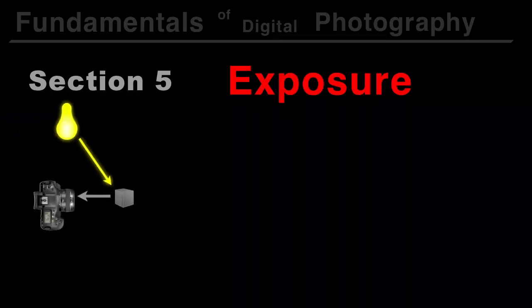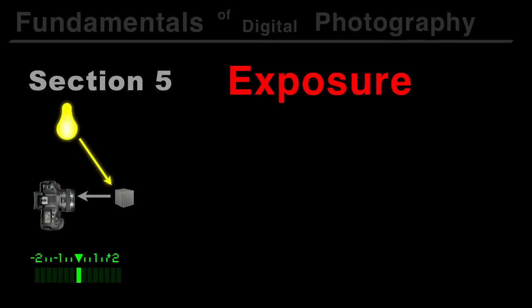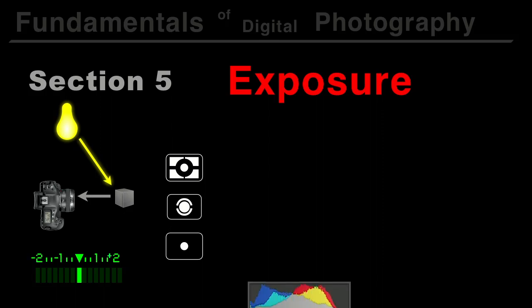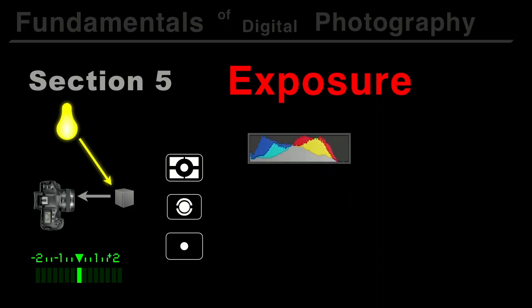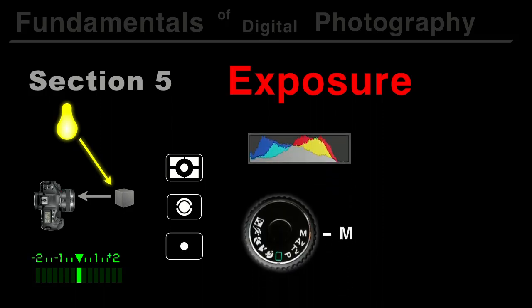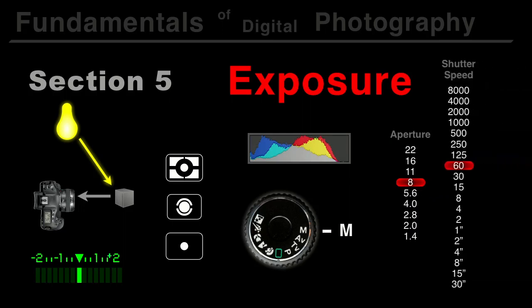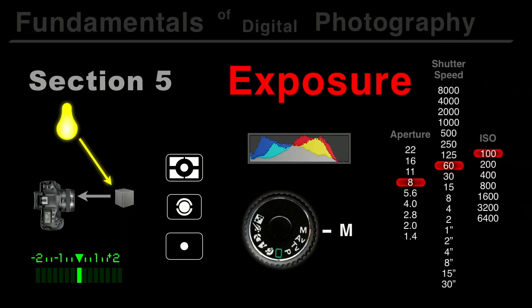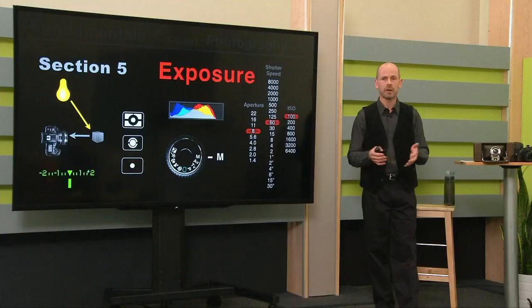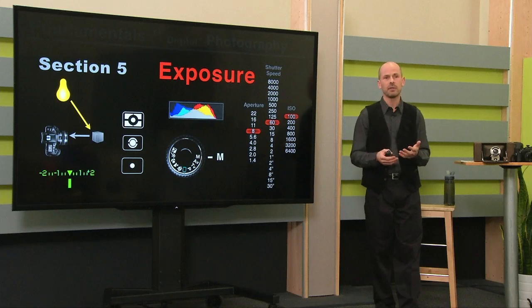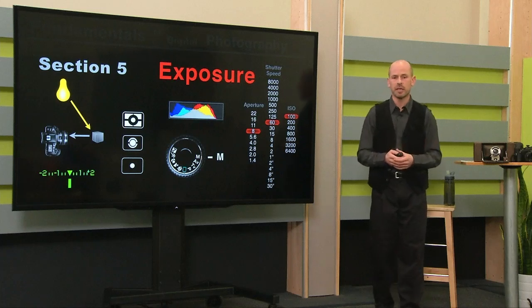Section 5 is on exposure. We're going to talk about how the light meter in the camera works, different metering modes, and explain how histograms work and what to look for. Then we're going to get into the exposure modes and take the knowledge we've learned about aperture, shutter speed, and ISO, and start putting it together so you can figure out how to balance all of these things when you want to take a picture.